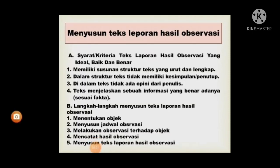Kemudian yang terakhir yaitu menyusun teks laporan hasil observasi. Syarat atau kriteria teks laporan hasil observasi yang ideal: pertama, memiliki susunan struktur teks yang urut dan lengkap. Kedua, dalam struktur teks tidak memiliki kesimpulan atau penutup. Ketiga, di dalam teks tidak ada opini dari penulis, atau teks laporan hasil observasi harus benar-benar berdasarkan fakta di lapangan. Keempat, teks menjelaskan sebuah informasi yang benar adanya, atau sesuai fakta.